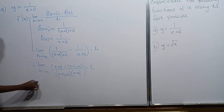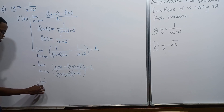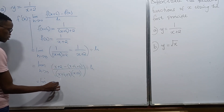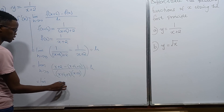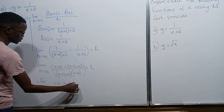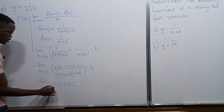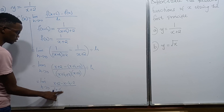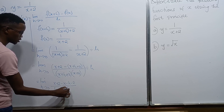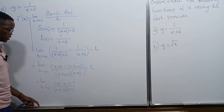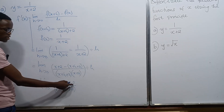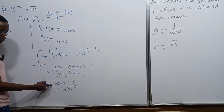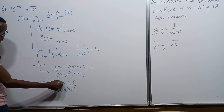We continue: taking the limit as h approaches 0, we distribute the negative throughout the numerator to get x plus 2 minus x minus h minus 2, divided by (x plus h plus 2)(x plus 2). We notice that positive 2 and negative 2 cancel, and negative x and positive x also cancel.